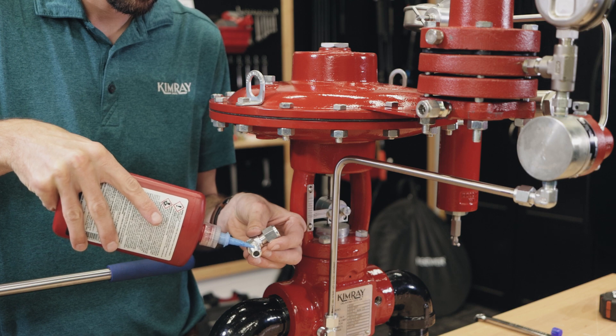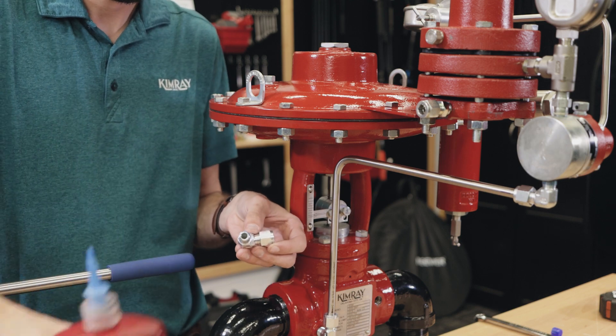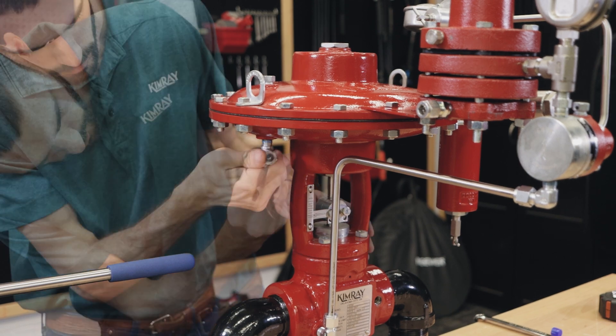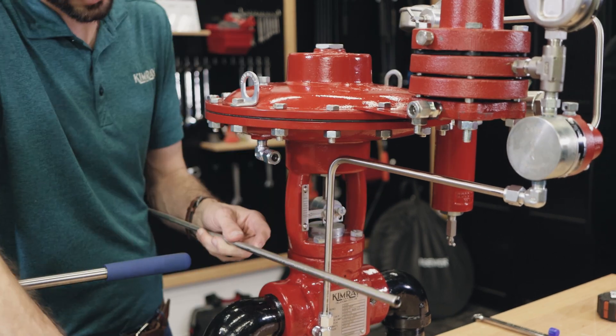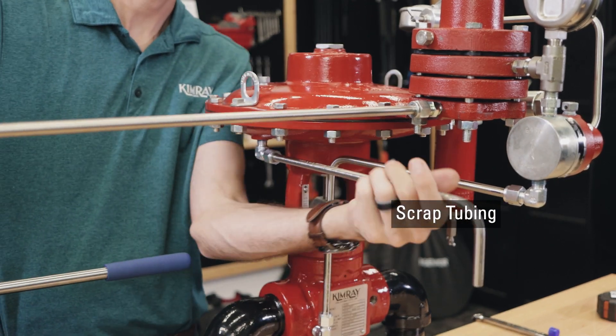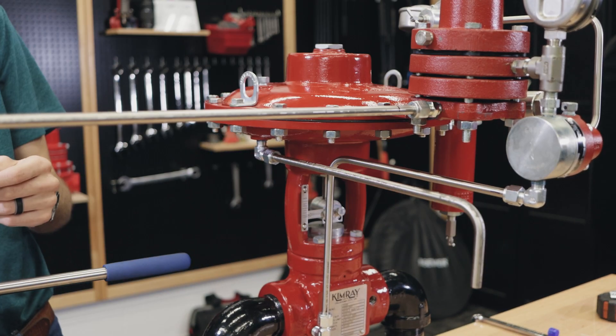On this example, we'll be making a 90 and an offset bend. First, we'll measure for the first 90 degree bend. Use a piece of scrap tubing in one fitting and your actual tubing in the other. Use a level to mark where your center line will be.